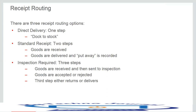In the standard receipt flow, once the goods are received we need to do a put away transaction to move the material from the receipt to the storage locations. If inspection is required, it involves three steps: in the first step the goods are received, in the second step an inspection is performed where you accept or reject the goods with detailed inspection results, and in the third step the accepted goods are put away.